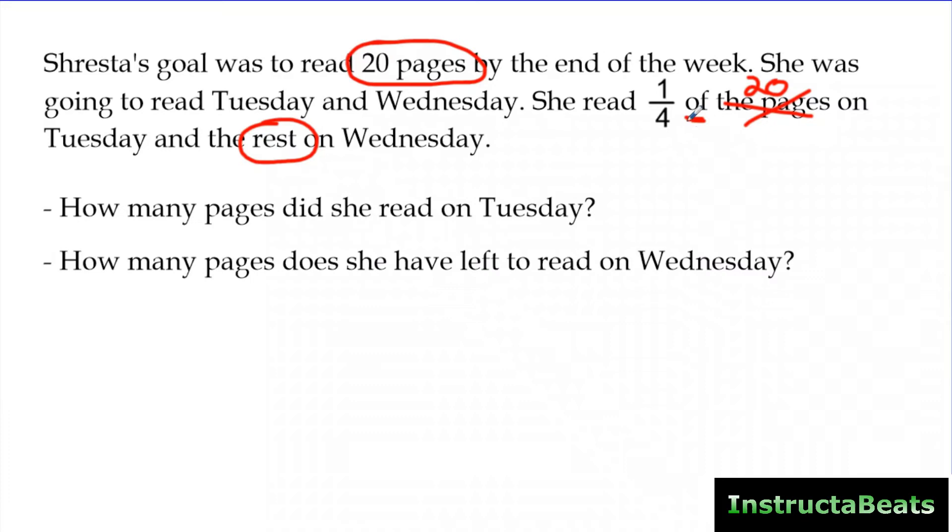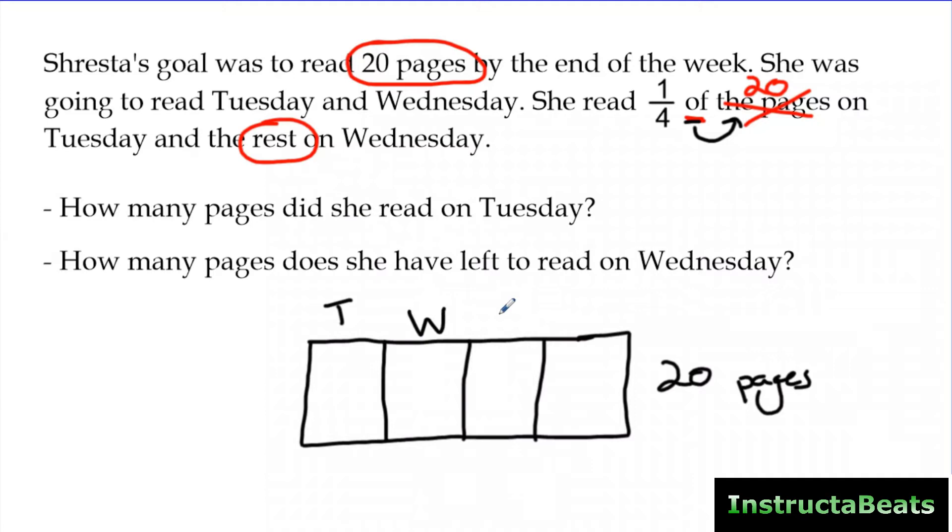Now again, if you've underlined this word of, and you see that this is really one-fourth of 20, you know that you can draw this tape diagram right here. Now watch when I draw this, I'm going to be able to answer both of these questions using my information. So I know that this was 20 pages total, and I know that because my denominator right here was four, she read one-fourth of the pages on Tuesday. So I'm going to split this into four equal groups, and then I'm going to label it. One of the groups was Tuesday, and the rest was Wednesday. That means these other three parts had to be on Wednesday. So now I've labeled this, and if I have 20 divided into four equal groups, that's going to be five in each group.